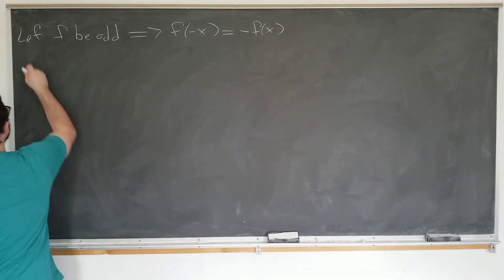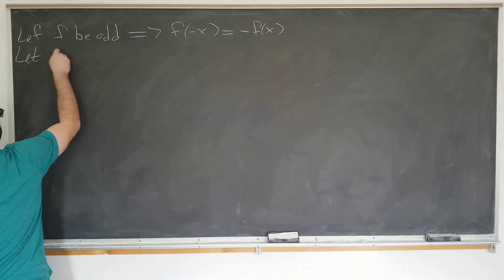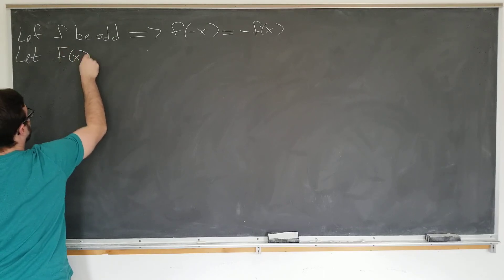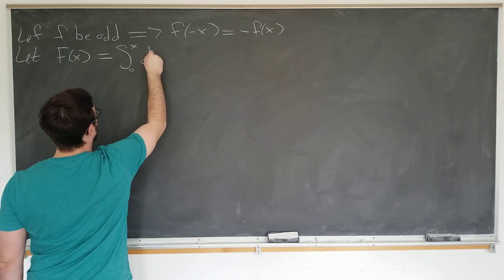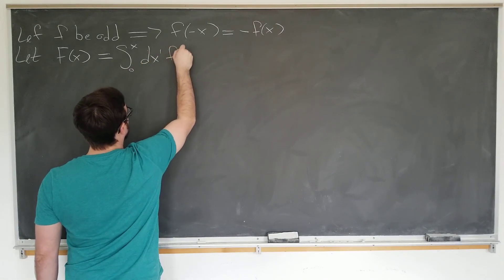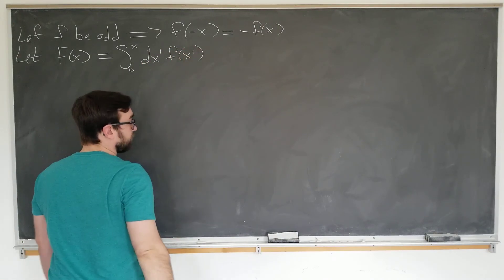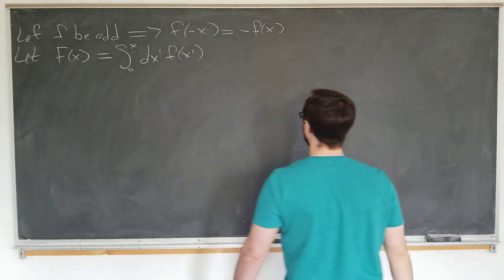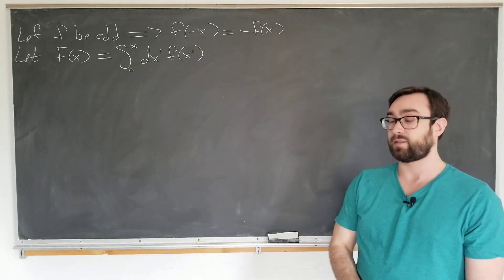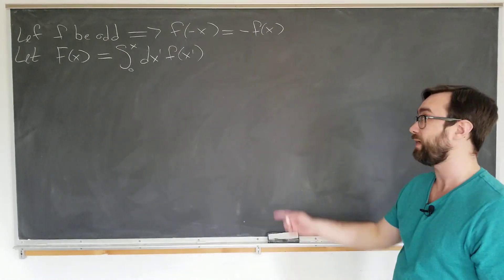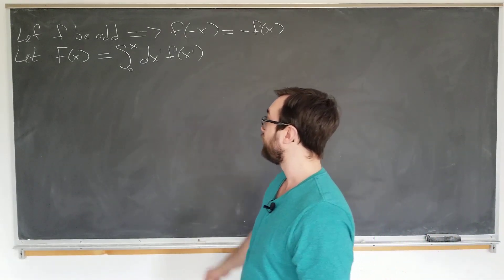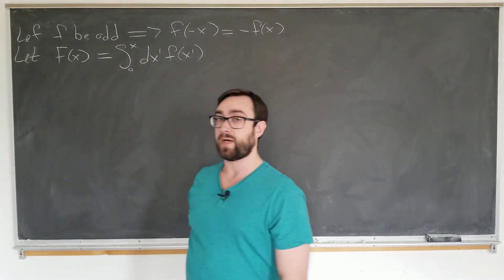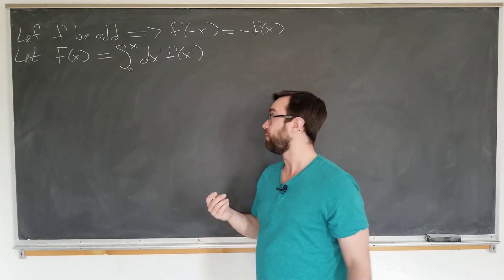So we're going to let F(x) be defined as the integral from zero to x with respect to some other variable x prime of the original function of the new variable. And the first step of the proof is to show that this function is actually even. So all we have to do is plug x goes to minus x in our definition here and see what we get.